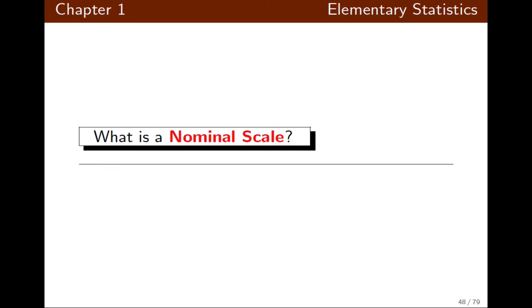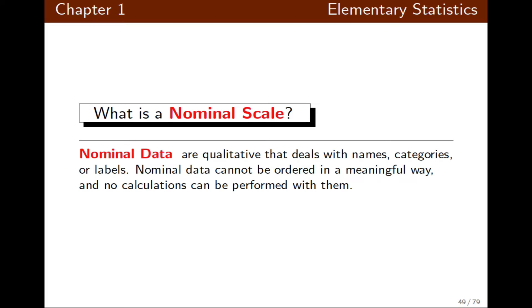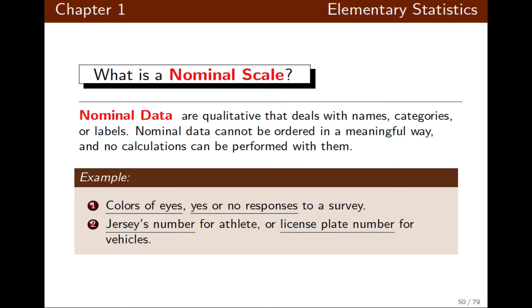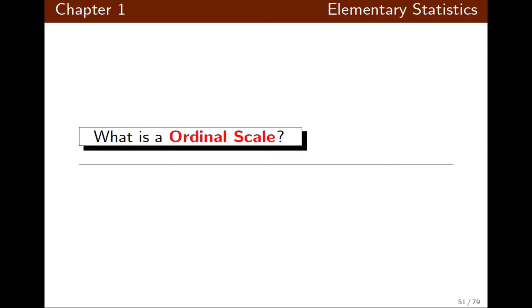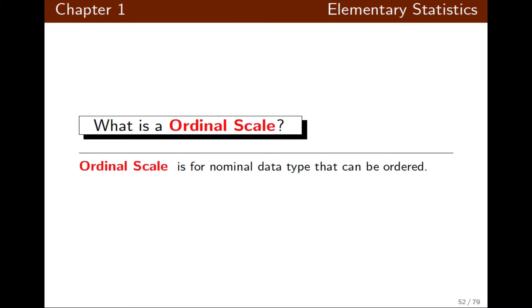What is a nominal level of measurement? We use it for qualitative data that deals with names and categories. Nominal data cannot be ordered and there is no calculation done with them — they're like names. Some examples include color of eyes, yes or no responses, a jersey number, and a license plate number.